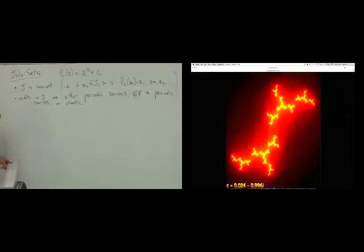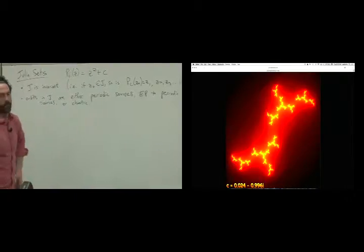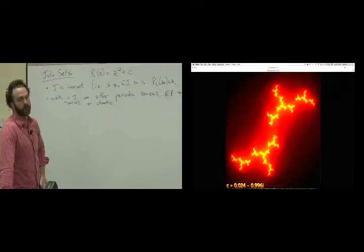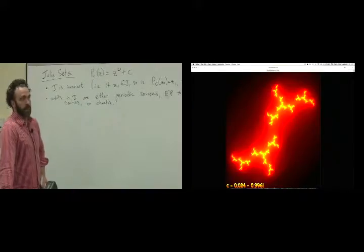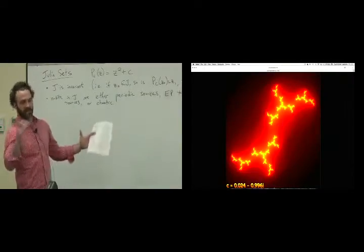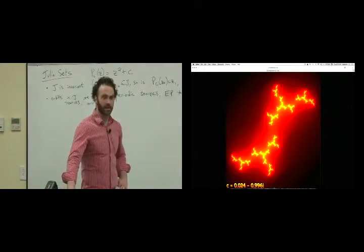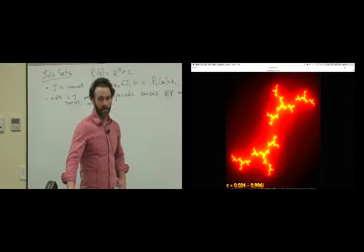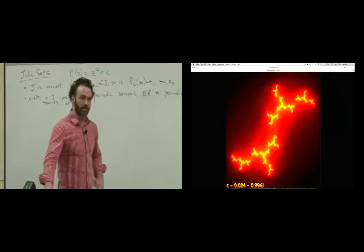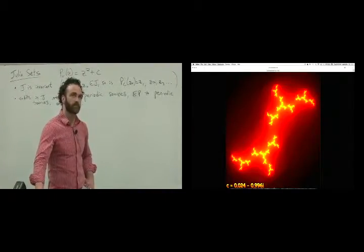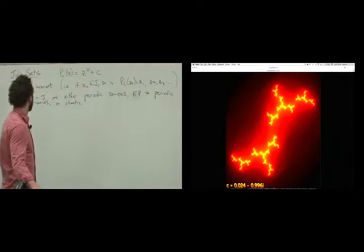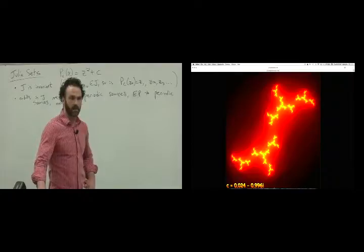Student question: if you iterated from zero, how would you know you were on J? If it goes to a sink, you know it's not in J, because J is the boundary of the sink and the basin of infinity. If the origin goes to infinity, you know it's not in J. If it is eventually periodic to a source, you know that it is in J. The origin could also be chaotic, and we'll be able to quantify all those things well.